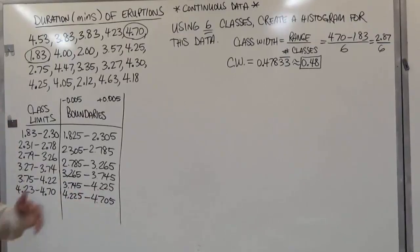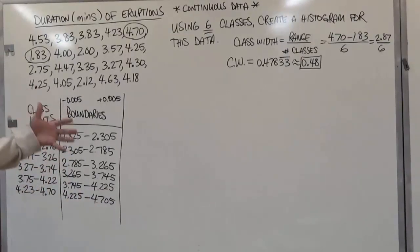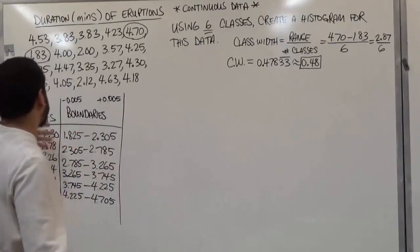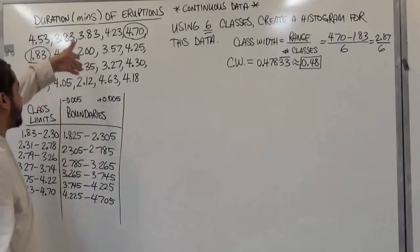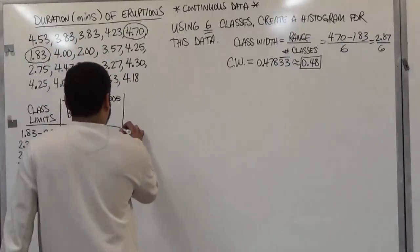Now, once we have our boundaries in place, we can go ahead and create the frequencies for each class. To do the frequencies, again, we're going to go counting off the numbers from the left to right. So here we have, and in the previous video, I instructed you guys how to count going downwards per column.